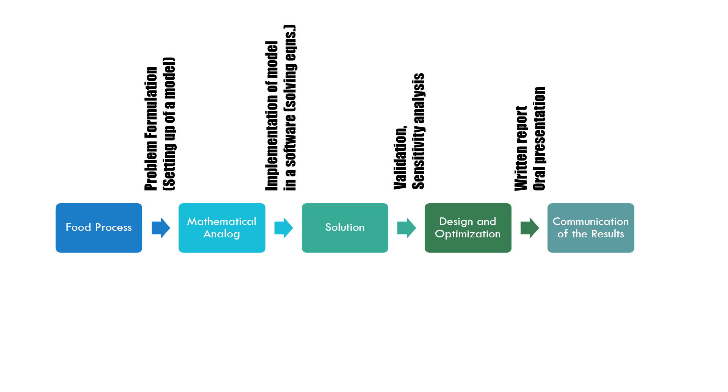Here we summarize the typical steps in a modeling process. First, we do the problem formulation where we take a physical process and write its mathematical analog, which is the governing equation, boundary conditions and so on. The next step is to solve those equations. That is implementation of the model in a software. Once we start to get solutions, we need to validate the solutions. Once the model is validated, then we generate lots of what-if scenarios. That's the sensitivity analysis. Finally, we make sense of all these results by distilling them into written reports and oral presentation.